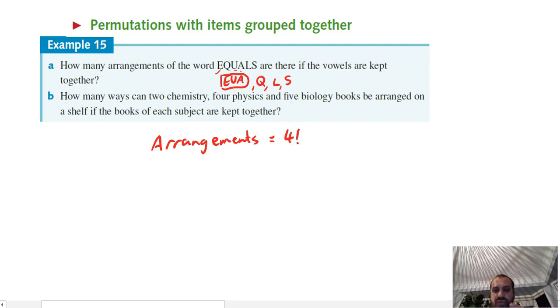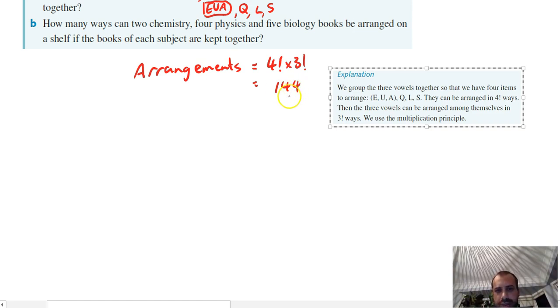So that's the arrangement of four letters, but one of the letters can be arranged in multiple ways. EUA could be EUA, it could be EAU, it could be AUE, AEU - it can be arranged in 3 factorial ways because there's three items and I'm going to arrange all of them. Okay, so 4 factorial times 3 factorial is going to give me 144 as the answer.